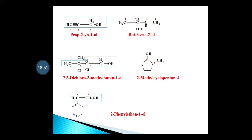Another example: 2,3-dichloro-3-methylbutan-1-ol. First select the longest chain — 4 carbons, which is butane. The OH is at carbon 1, so it is butan-1-ol. The substituents are two chloro groups and one methyl group. In alphabetical order: chloro comes before methyl (C before M), so we write 2,3-dichloro-3-methylbutan-1-ol.